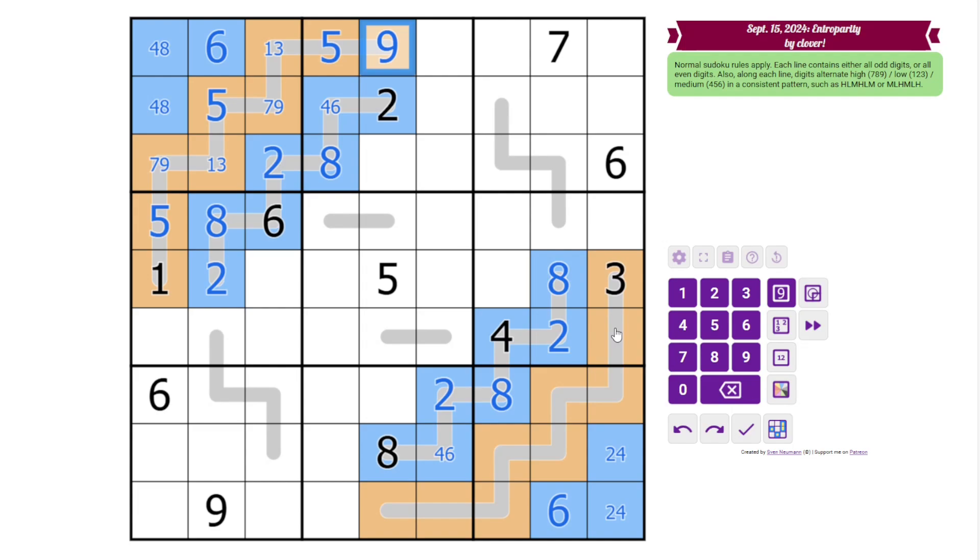Now down here, we can do the same type of thing. We have a low digit here, here, here. And then 5 has to go in one of these cells, because we need a medium digit. So this must be high, and this must be 5. This is 5, this is 5. This is our other high digit. And this one can't be 9, so it's 7.